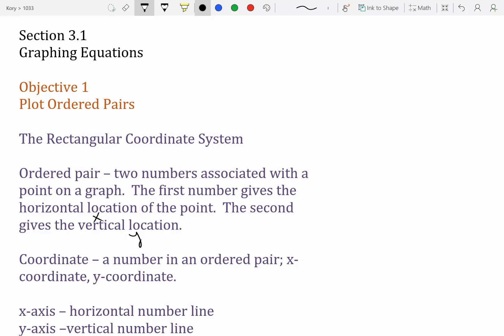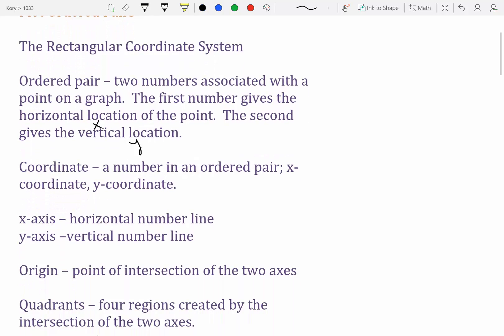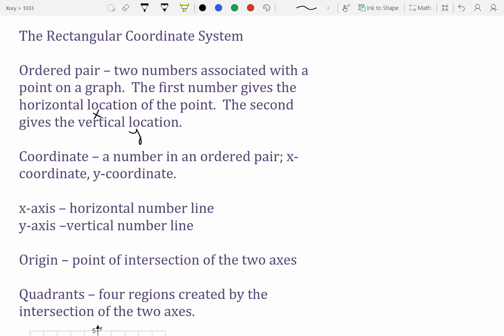So a coordinate point, or a coordinate, is a number in an ordered pair. You have an x-coordinate and a y-coordinate. X-axis is the horizontal number line. Y-axis is the vertical line.